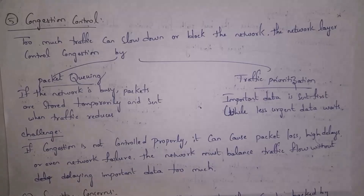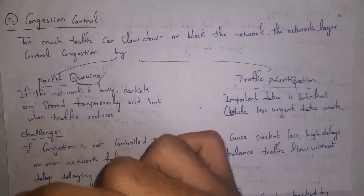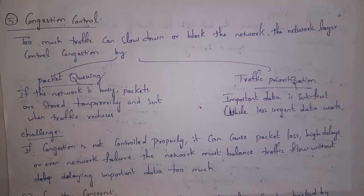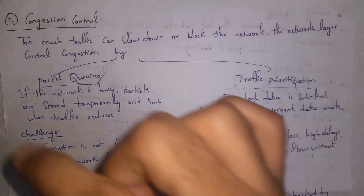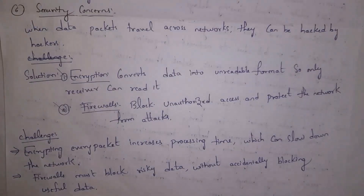Traffic prioritization means when there is too much data in the network, only important data is allowed to send first and unnecessary data is made to wait. The network layer allows only important data and makes unnecessary data wait — this is traffic prioritization. The challenging part is that if traffic is not controlled properly, data will be transferred to the receiver very slowly, some packets may be lost, and in some situations the network may fail.